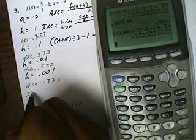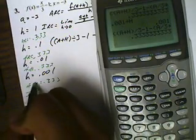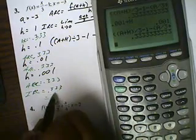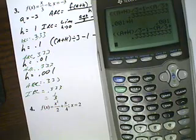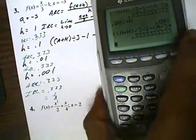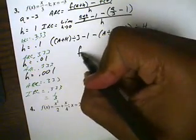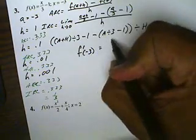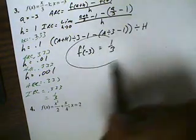This suggests that my instantaneous rate of change would be 0.333 as well, or we should say one-third. Our conclusion is that the derivative of f at negative 3 will be one-third — the instantaneous rate of change is one-third.